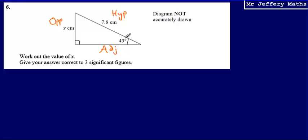What lengths are important to my question? The opposite is important because I'm trying to find it. The hypotenuse is also important because I know what that length is. The adjacent has nothing to do with this question, so I can cross that out.